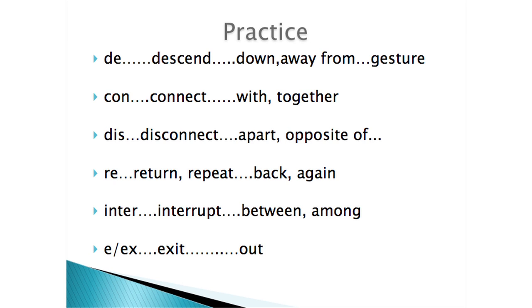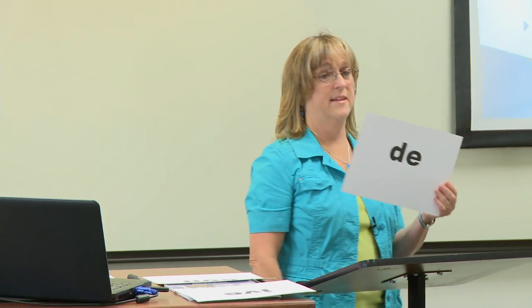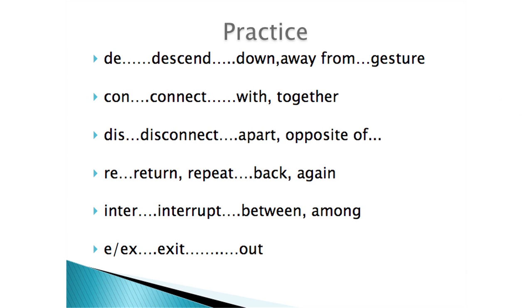Again, we're going to put a key word with each prefix. For D, we have 'descend' — down or away. So: D, descend, down or away. Con means 'with or together' — key word 'connect': con, connect, with or together.